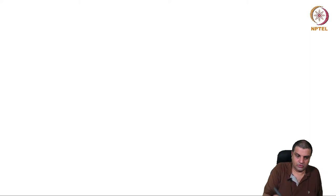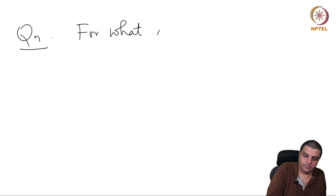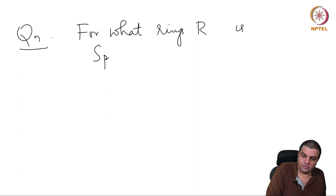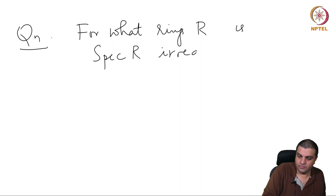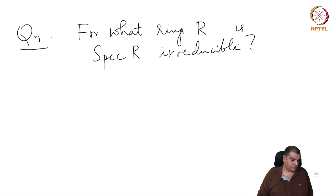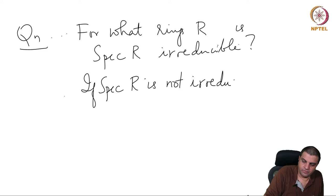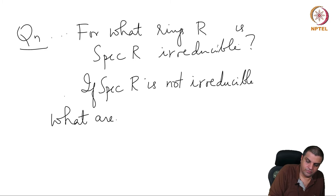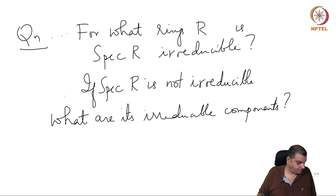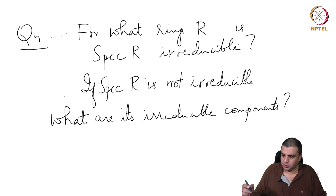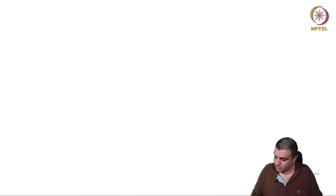Now we would like to understand the following question: for what rings R is spec R irreducible? This is one question we would like to understand. And in general, if spec R is not irreducible, what are its irreducible components? This is what we want to understand.